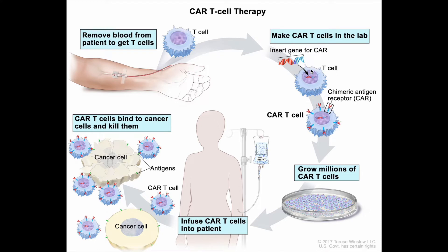This is done by inserting a gene for the CAR. Once the gene is inserted, it results in manifestation of these chimeric antigen receptors, which makes these T-cells the CAR T-cells. Then they grow these CAR T-cells in a cultured media. Finally, it is infused to the patient where these CAR T-cells directly attack the tumor cells and kill them.